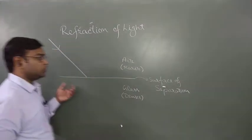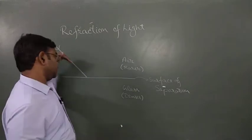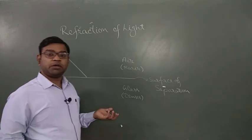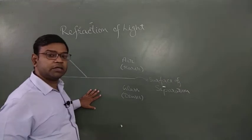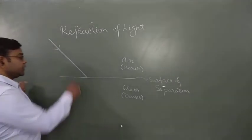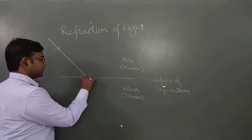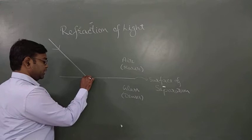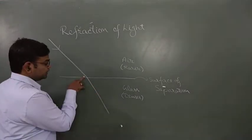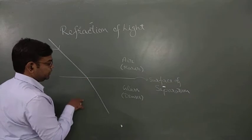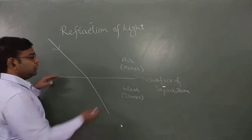Since glass is a transparent material, there is no need to reflect the incident ray back. What we observe is that the light ray enters the second medium — glass — by changing its path by some degree. If the surface of separation were not there and it were all air, the light ray would travel straight in the original direction.